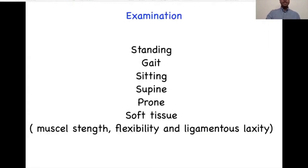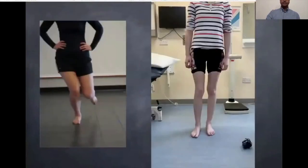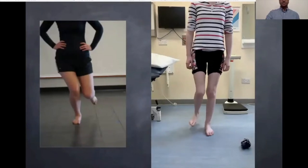In terms of clinical assessment, the main points are: look at the squinting patellae, look for torsional deformity, and assess for any obvious varus or valgus deformity. It is important to assess the strength of the hip muscles because that is fundamental — if you miss that, even if you do perfect surgery, the patient may continue to have symptoms.